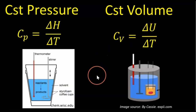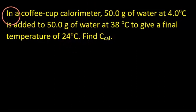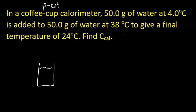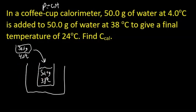Let's get into some exam problems, starting relatively easy and working harder. In a coffee cup calorimeter — if you see coffee cup, think constant pressure calorimeter — we have 50.0 grams of water at 38 degrees Celsius and 50.0 grams of water at 4.0 degrees Celsius being added together. We want to know what the final temperature is.